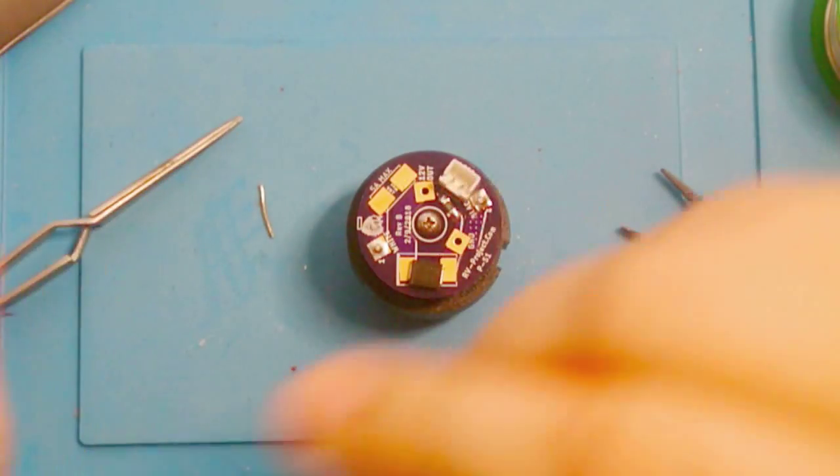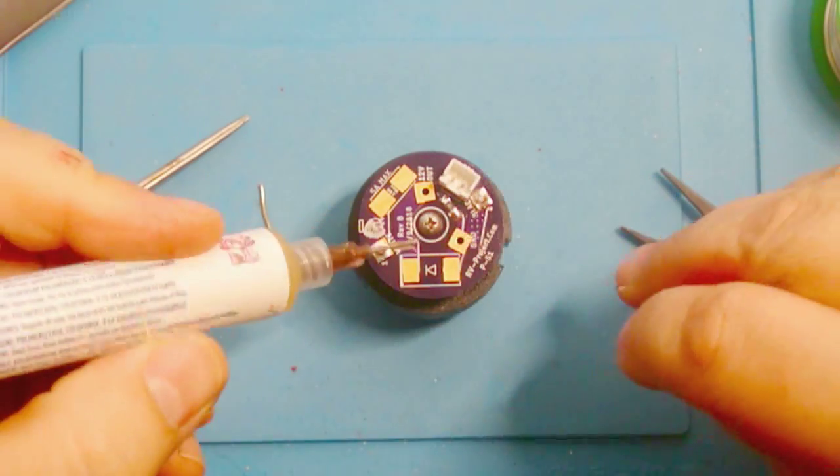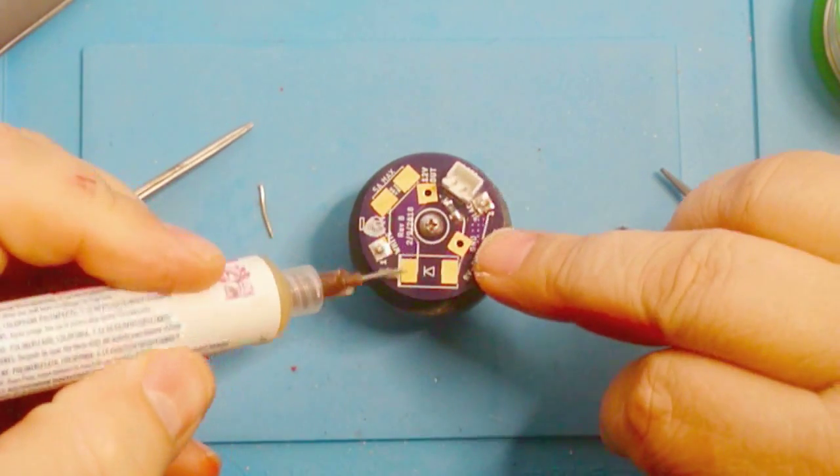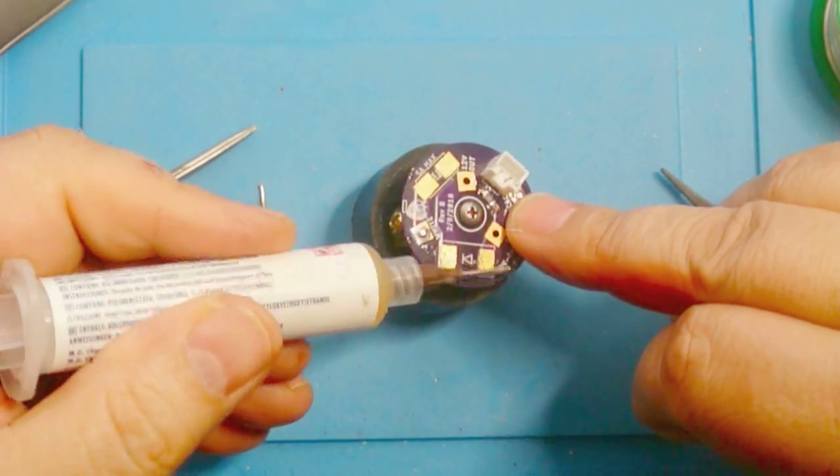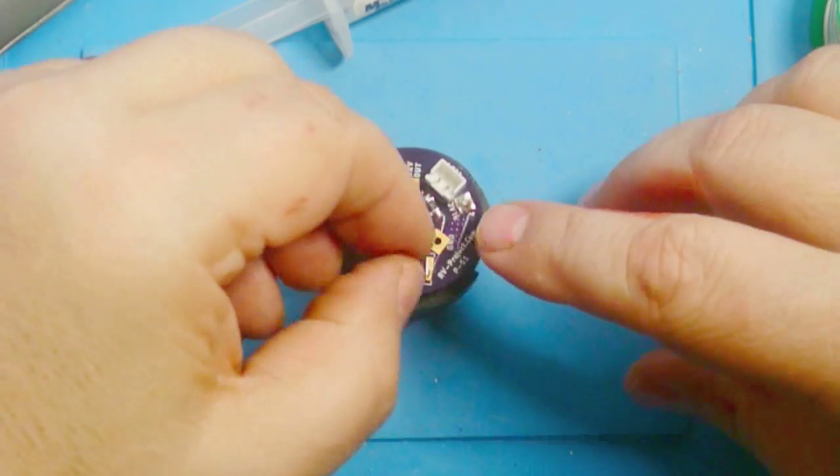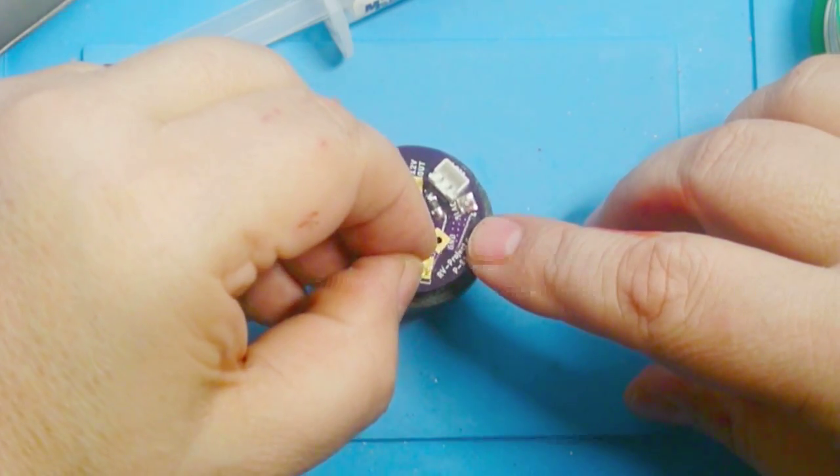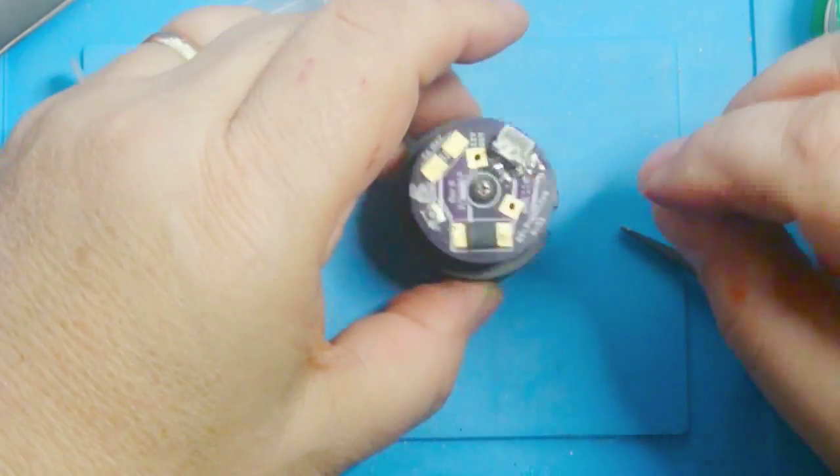Again, with surface mount, it's a little bit helpful if you use a little flux. This is a no clean flux, so it means you don't have to clean the residue off. This one actually is big enough that you can handle it with your fingers without needing a pair of tweezers.